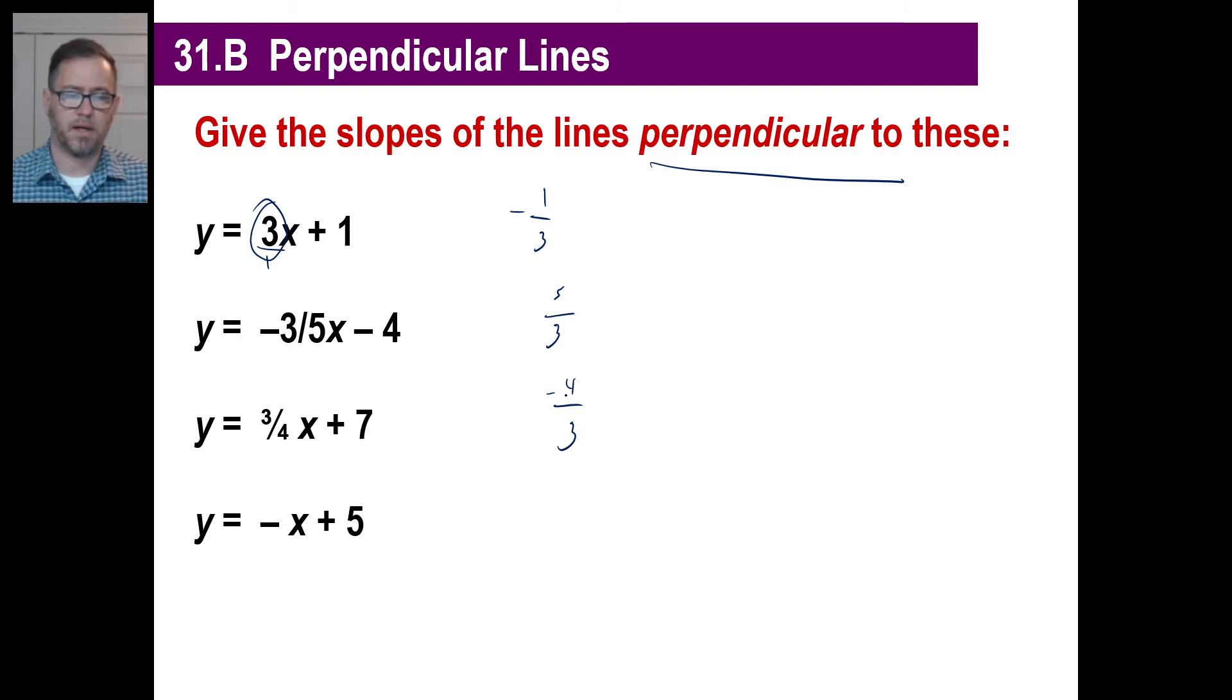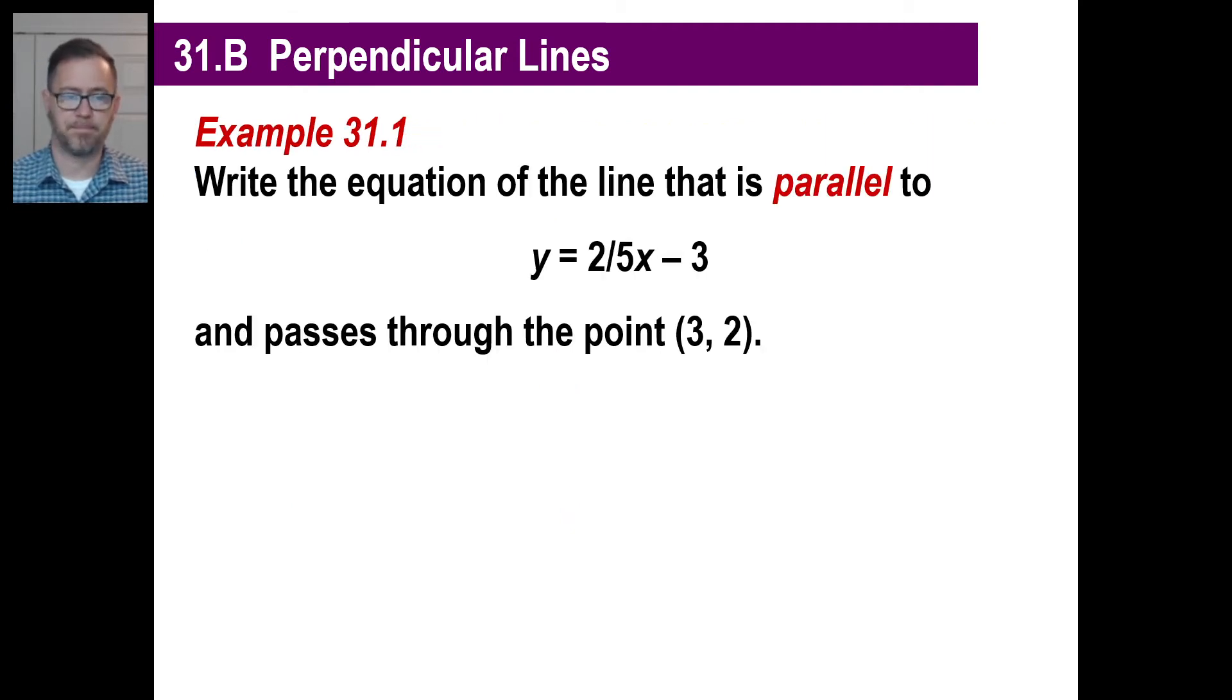All right, we'll do one more. Negative x plus 5. Well, what is the slope, by the way, here? If there's no number there, of course, it's a 1, right? So you can write it as a 1 over 1 if you want to. So the negative reciprocal of 1 over 1 is still 1 over 1, but just positive this time, right? So it's just going to be that.